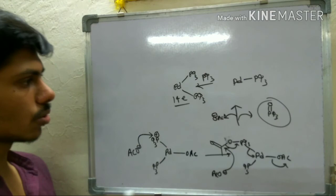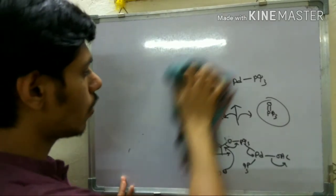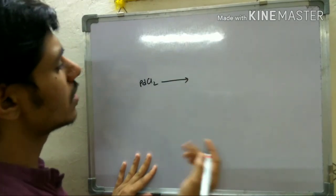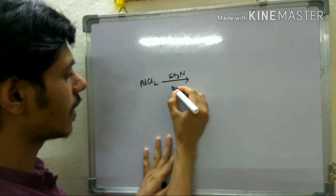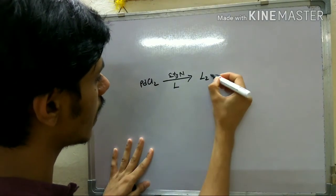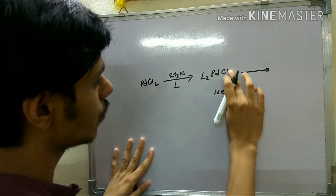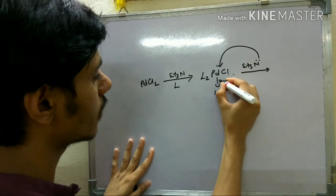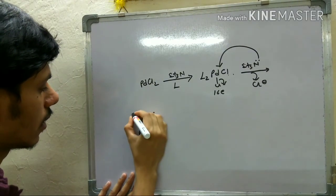So starting from palladium(II) acetate you obtain a palladium(0) complex, which is the effective reagent. Palladium(0) can also be obtained from PdCl₂. In that case, triethylamine is generally used along with a neutral ligand L — which can be triphenylphosphine or any other neutral ligand. First, two neutral ligands coordinate to give a 16-electron complex. Then triethylamine attacks on the palladium and kicks off a chloride as Cl⁻.